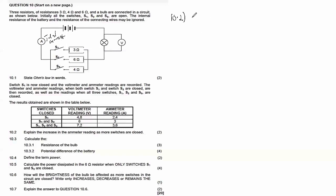Question 10.2 says: explain the increase in ammeter reading as more switches are closed. When only S1 was closed we had 2.4 A; when S1 and S2 were closed we had 3 A; when S1, S2, and S3 were all closed we had 3.6 A. The ammeter reading — and therefore the current — kept increasing. We want to explain why.